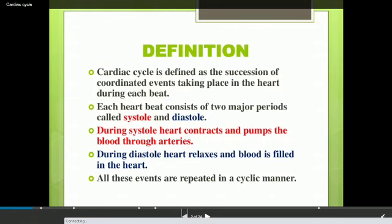First of all, we will see what is the definition of the cardiac cycle. The cardiac word always refers to the heart. The cardiac cycle or the heart cycle is defined as the succession of coordinated events taking place in the heart during each heartbeat. In simple words, one contraction and one relaxation of the heart is called the cardiac cycle.